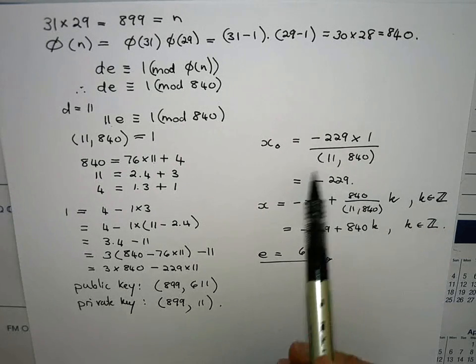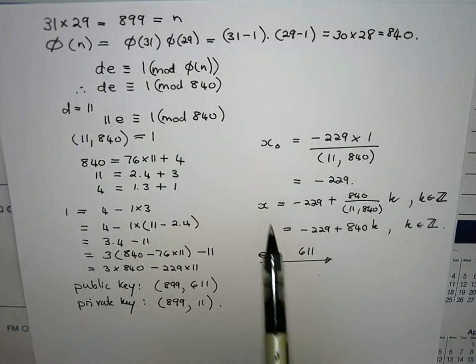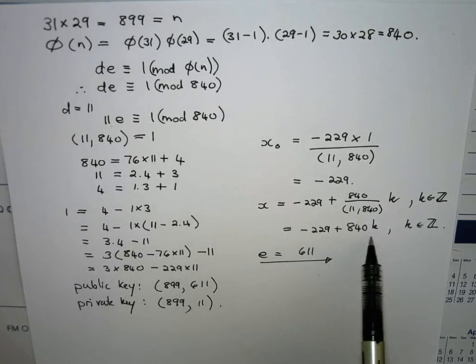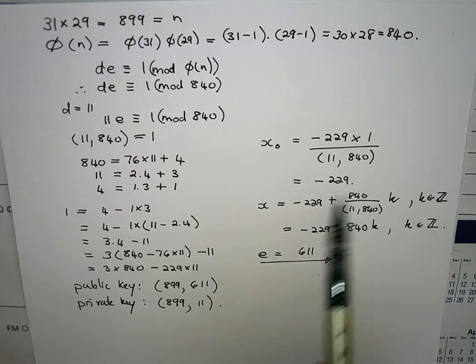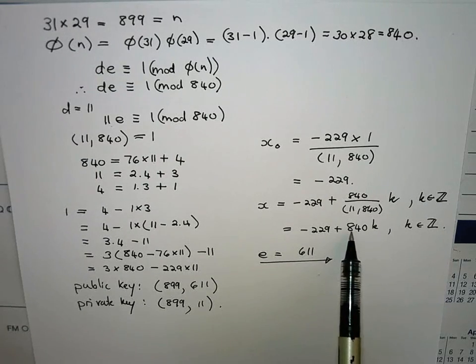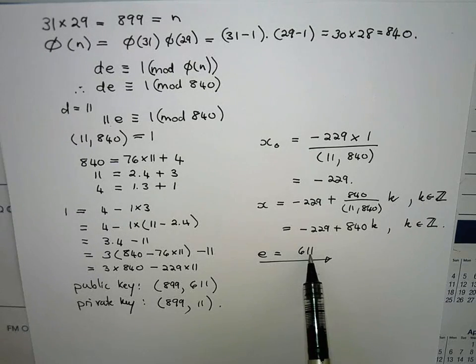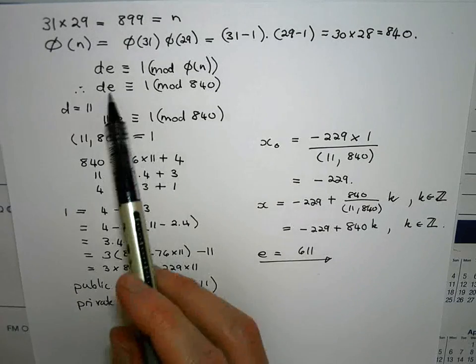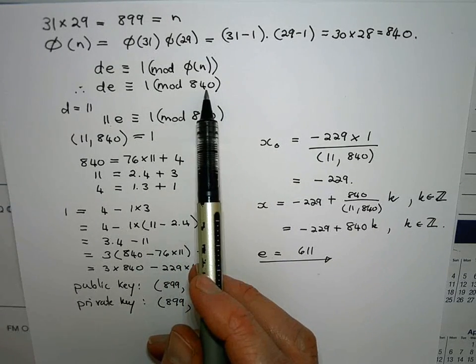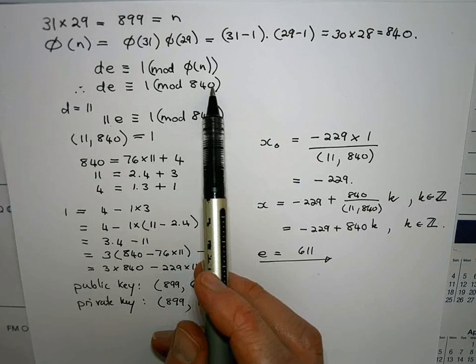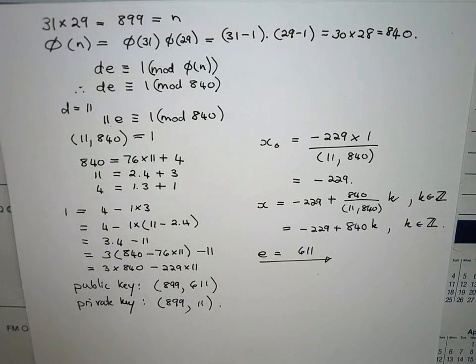As it was, it was actually a negative number. It was not within those bounds. So I had to go and look at how the general solution of this linear congruence would look and then pick a suitable value of k which would give me a solution which would be in those bounds. In this case I just had to add 1 times 840 and it gave me 611 which would be the solution of this linear congruence which lies between 0 and 839. And so I got my e for my public key and there I have my public and my private keys.